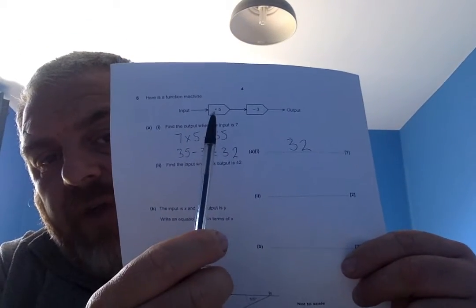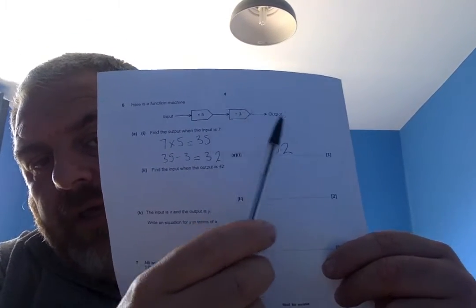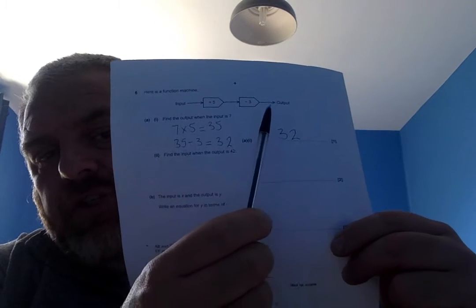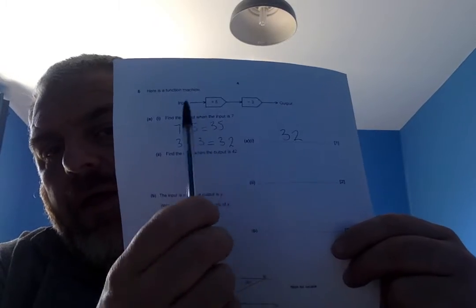So, my input times 5 minus 3 gives me my output. This time they're going to work it back. So, they're saying the output is 42. So, if I go back, find my input. So, I need to do the opposite. So, 42,